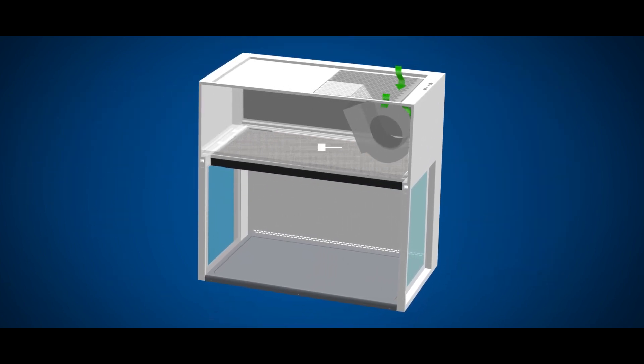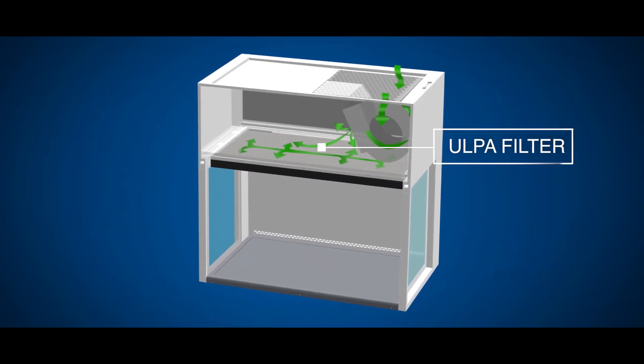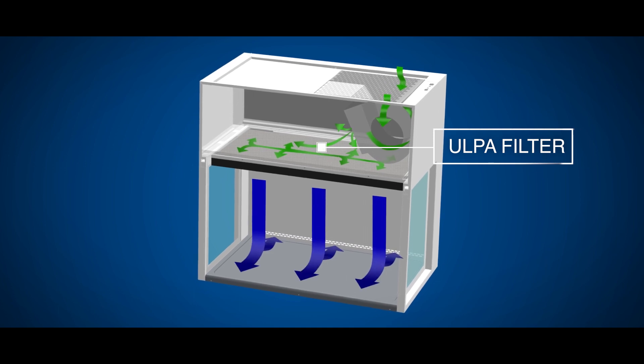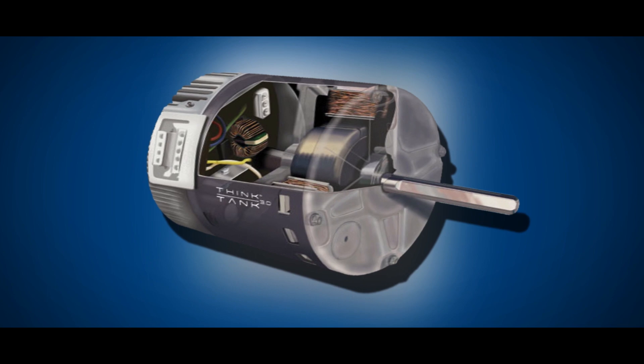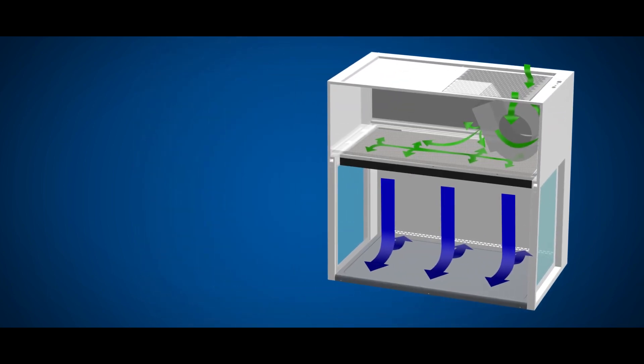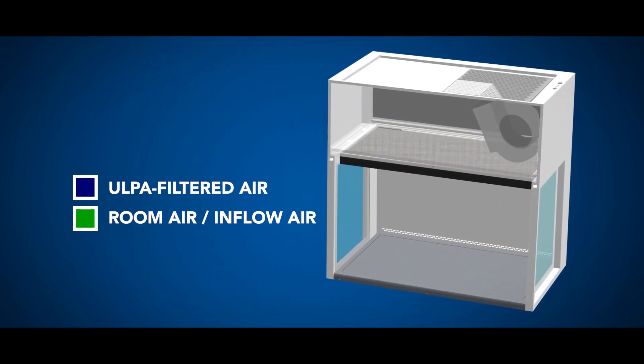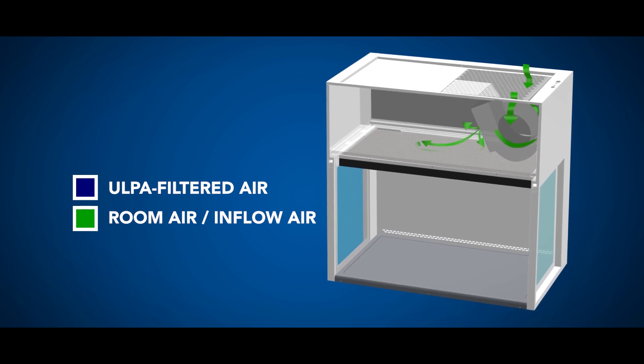Air is drawn from the top of the cabinet and passes through the pre-filter. The DC ECM blower facilitates air movement towards the ULPA filter to produce a stream of clean laminar air within the work zone, diluting and flushing contaminants present in the interior.